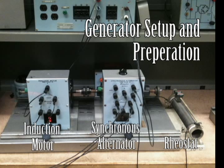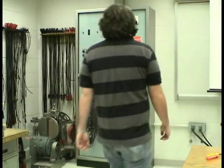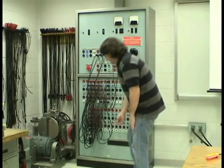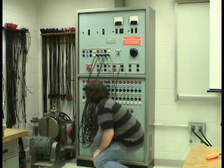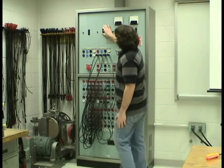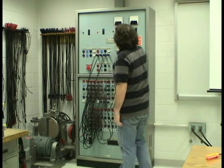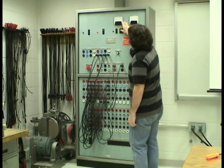The first portion of the demonstration will show the generator setup and preparation. In order for the generators to run, the voltage source needs to be turned on, first at the master switch, then at the 120/208 volts AC, and also at the 125 volt DC.